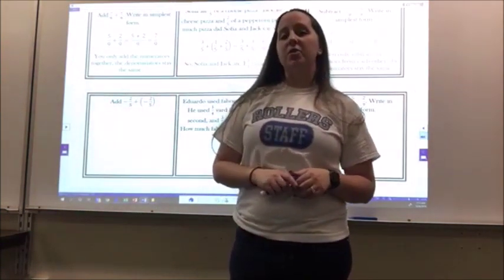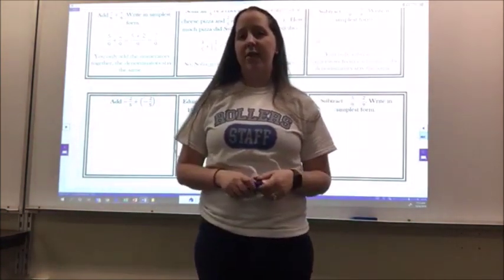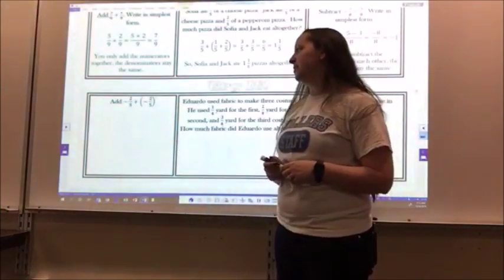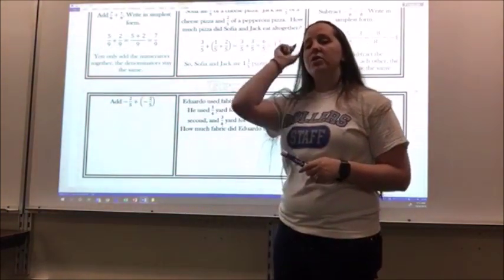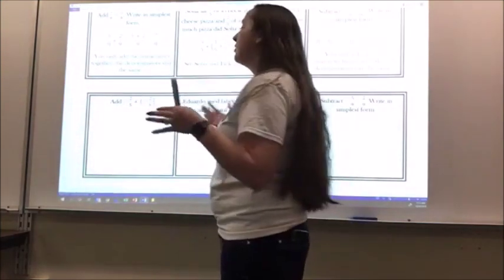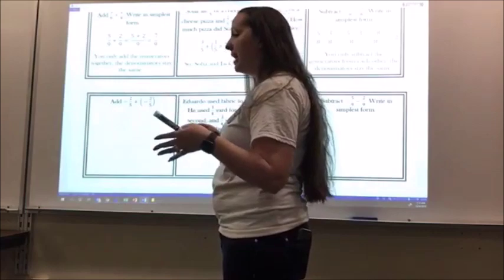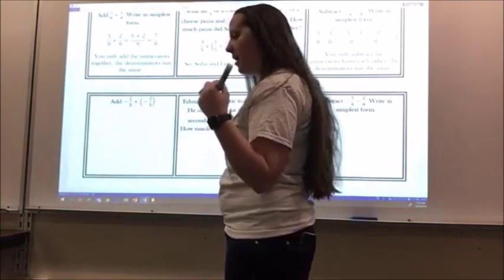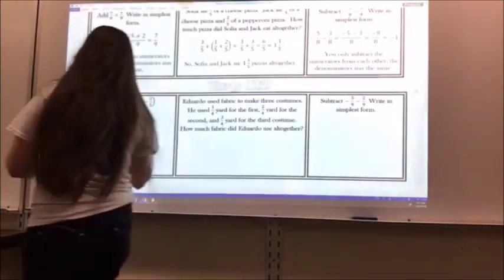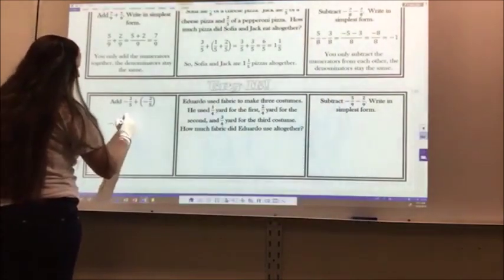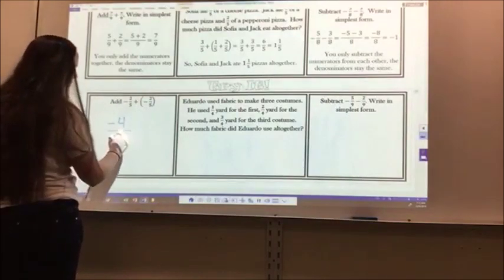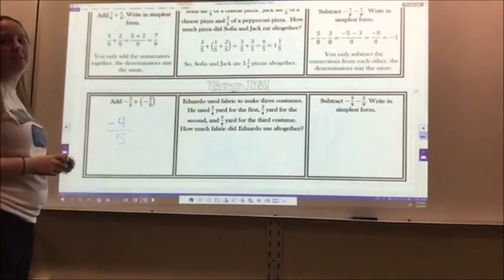All right, now that you've had a chance to try out the try problems, let's go over the answers together. For the first problem I have, add negative 2 fifths plus negative 2 fifths. So if we think about a number line, negative 2 plus a negative 2. So I'm still going backwards. One, two, negative 2 plus negative 2 gives me a negative 4. My denominators stay the same. So negative 4 fifths. I cannot simplify that any further.